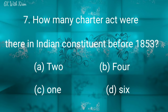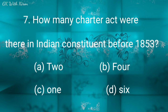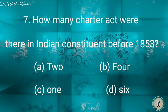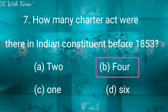Question seven: How many Charter Acts were there in Indian history before 1853? Option A: 2, option B: 4, option C: 1, and option D: 6. The correct answer is option B: 4.